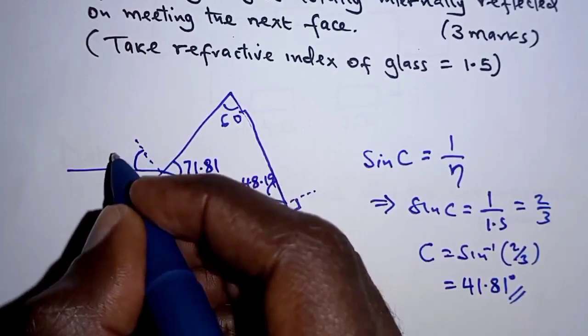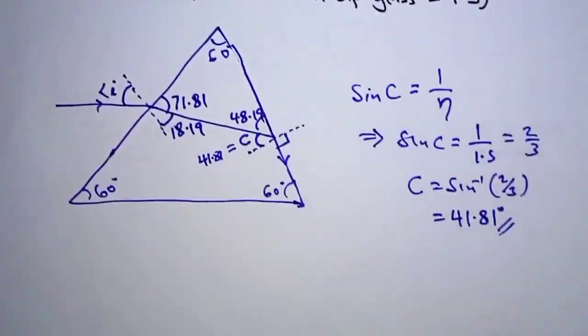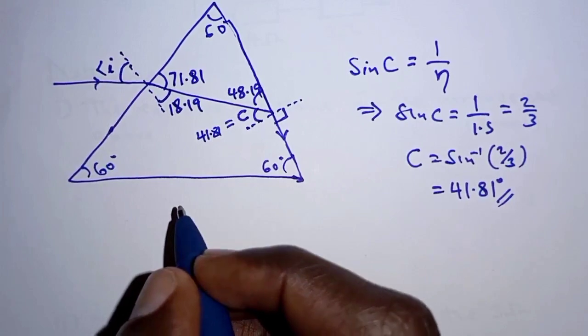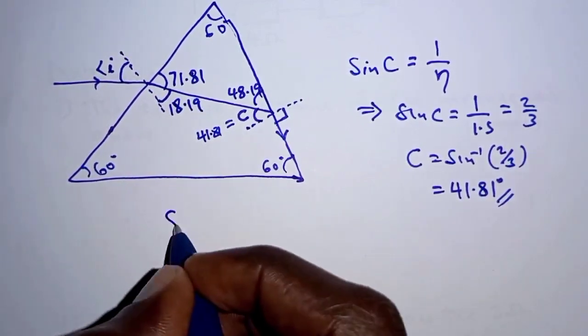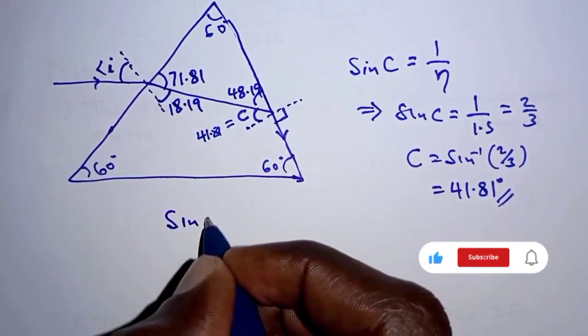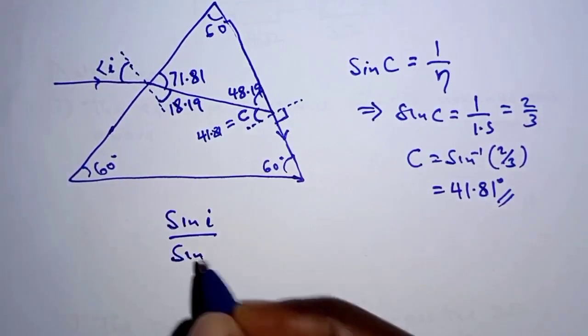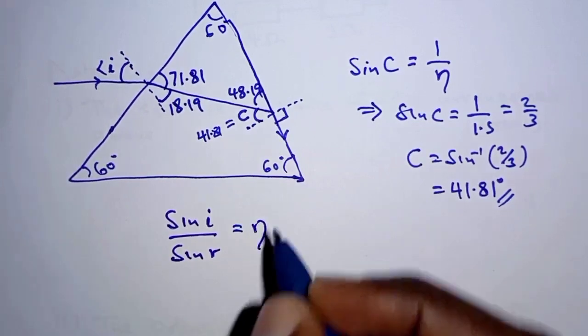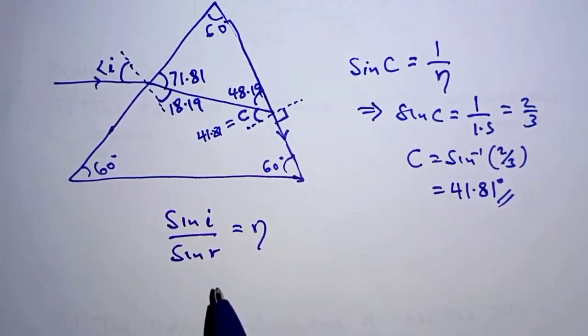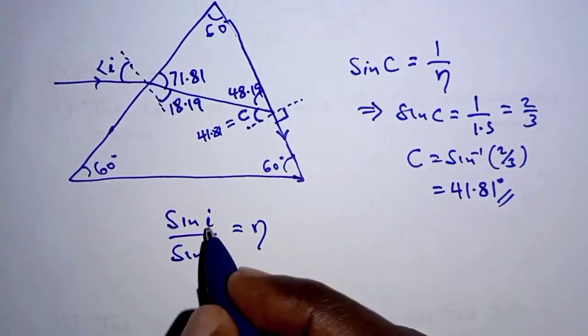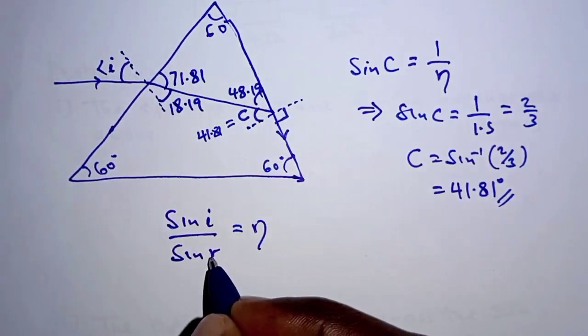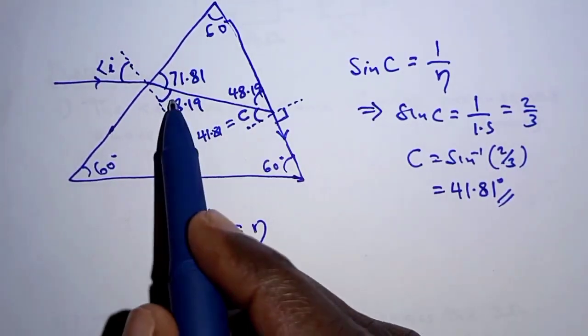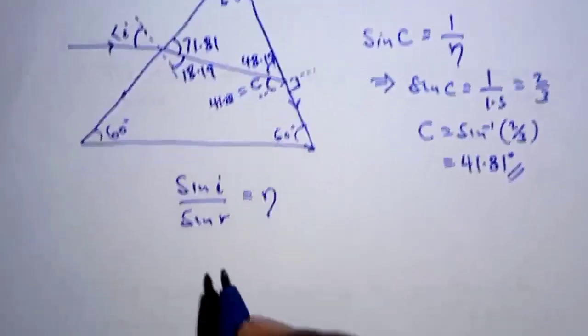The next thing, applying Snell's law: the sine of the angle of incidence over the sine of the angle of refraction should be equal to the refractive index. Now the refractive index we're given as 1.5. So we're looking for I when the angle of refraction is 18.19, just as we've seen here.